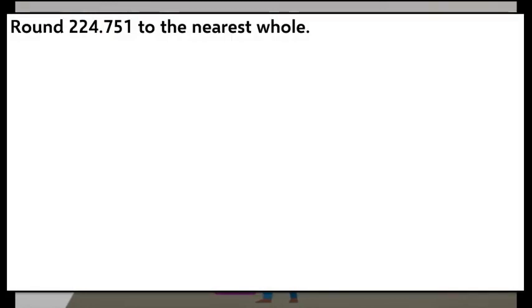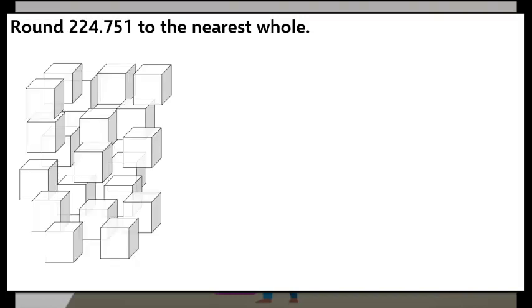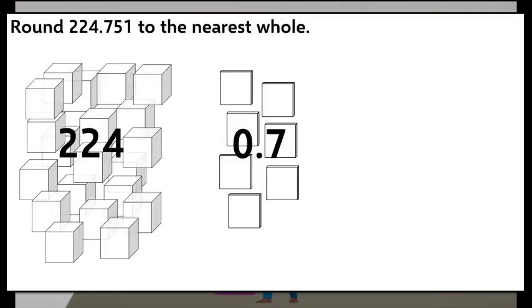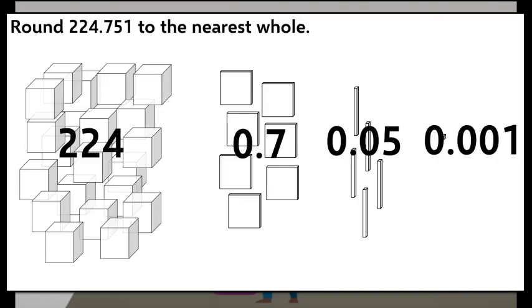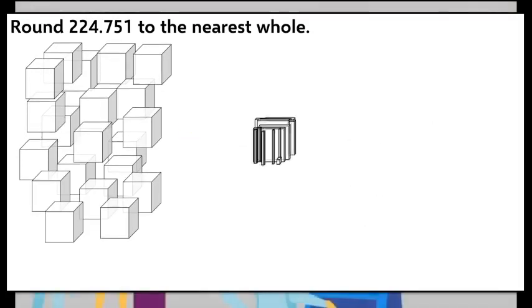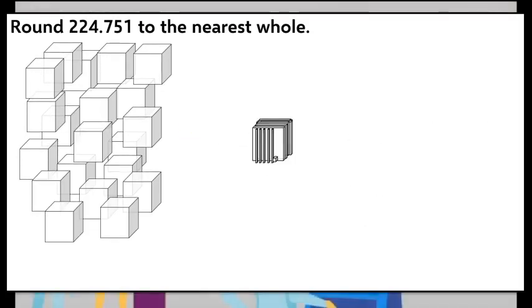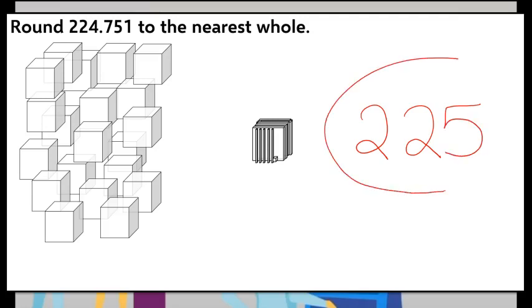Let's look at the same problem, but use a base 10 model to round. We have 224 wholes, and now 7 tenths, 5 hundredths, and 1 thousandths. The decimal part of our number gives us more than half of a whole, therefore coming close to giving us the 225th whole. So then 224 and 751 thousandths must round to 225.